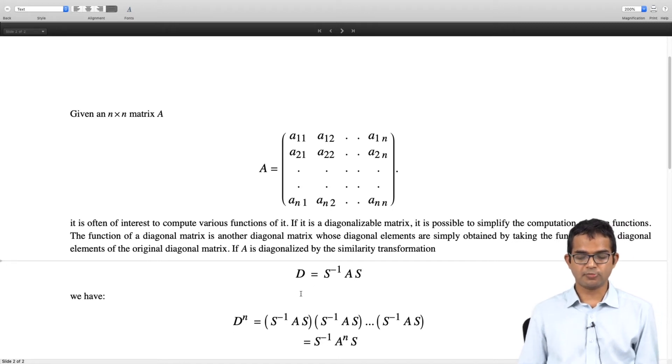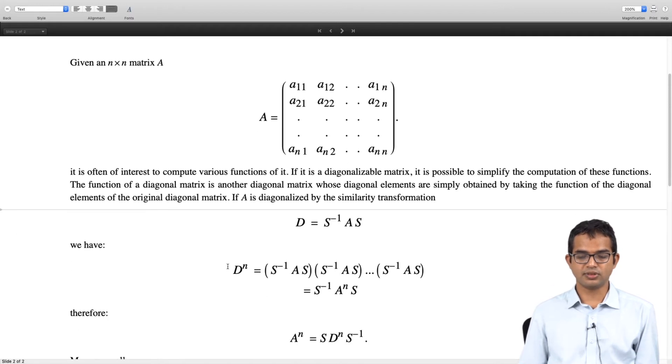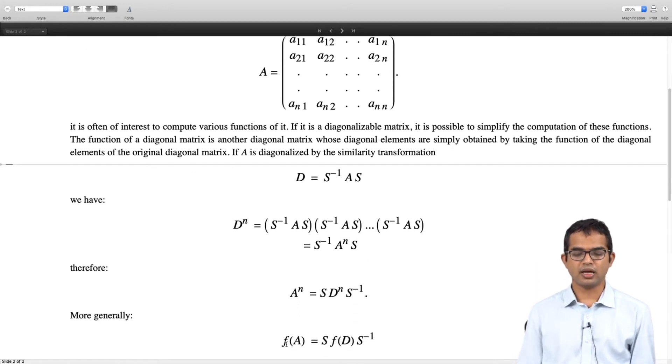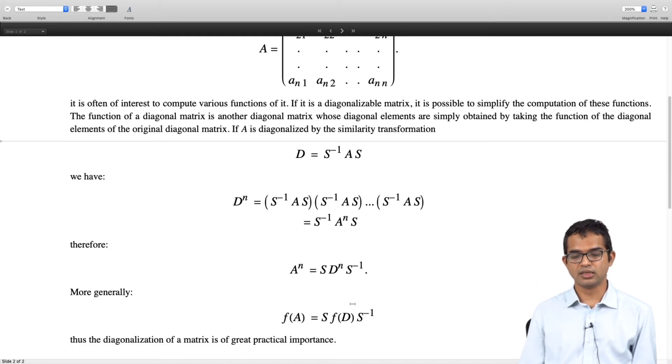Now we can multiply left hand side and right hand side with S on the left and S inverse on the right, and then we rearrange terms and you have A to the n is the same as S times D to the n S inverse. So if you can find the similarity transformation S which can diagonalize your matrix, and of course you know the eigenvalues, then it is very easy to compute A to the n. And in general you can find some function of A using the diagonal matrix and the similarity transformation.